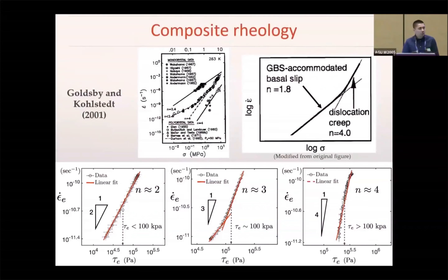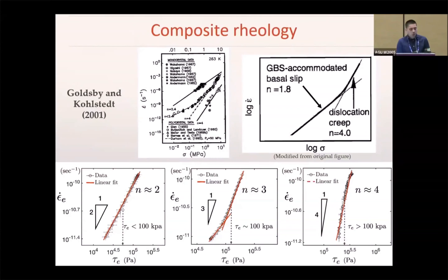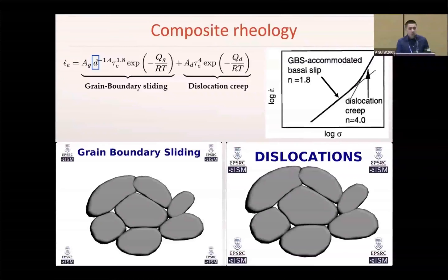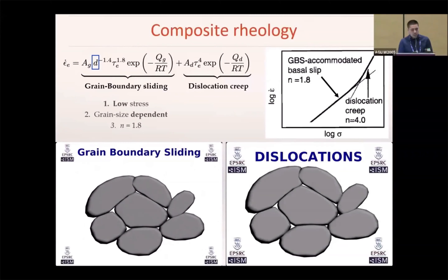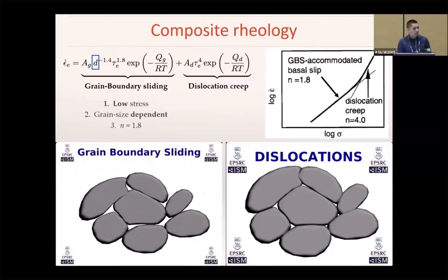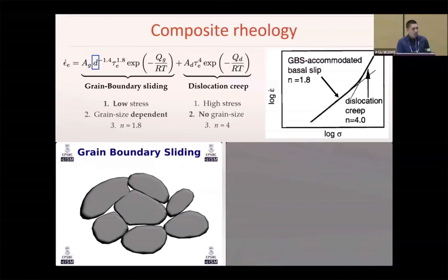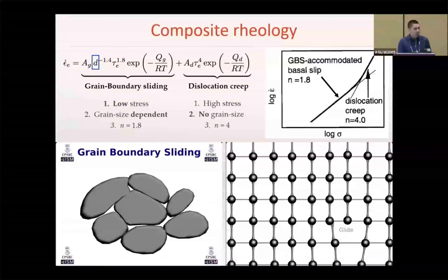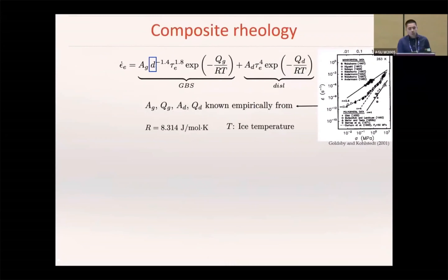This naturally reminds us of the well-known ice rheology results from Goldsby and Kohlstedt, known as the composite rheology. In short form, the composite rheology describes that ice deformation is mainly governed by two mechanisms: grain boundary sliding and dislocation creep. Ice consists of many tiny grains, and under relatively low stress these grains slide against each other, resulting in deformation depending on grain size. When stress becomes higher, the crystal lattice within the grains also starts to dislocate, resulting in another grain-size-independent deformation. From the literature, most coefficients in the composite rheology can be obtained empirically, so the only unknown in the expression is just the grain size.